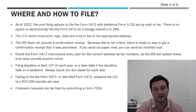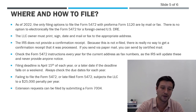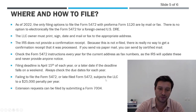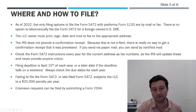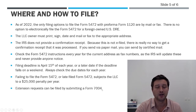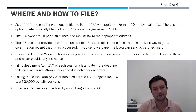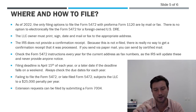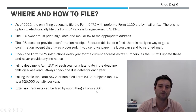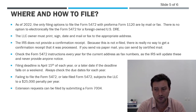Extension requests can be submitted if you feel like you need more time. Extensions for businesses are submitted via Form 7004. There are additional procedures in the Form 5472 instructions to submit those. You have to complete it by hand, print it out, sign it, and write 'foreign-owned U.S. disregarded entity' on the top, and then you can mail or fax it to the same office and they'll process an extension request for you.